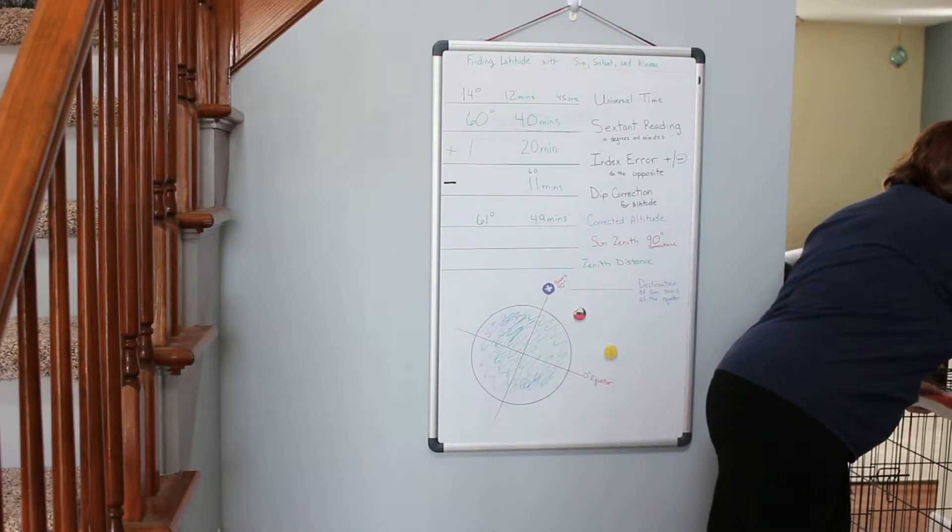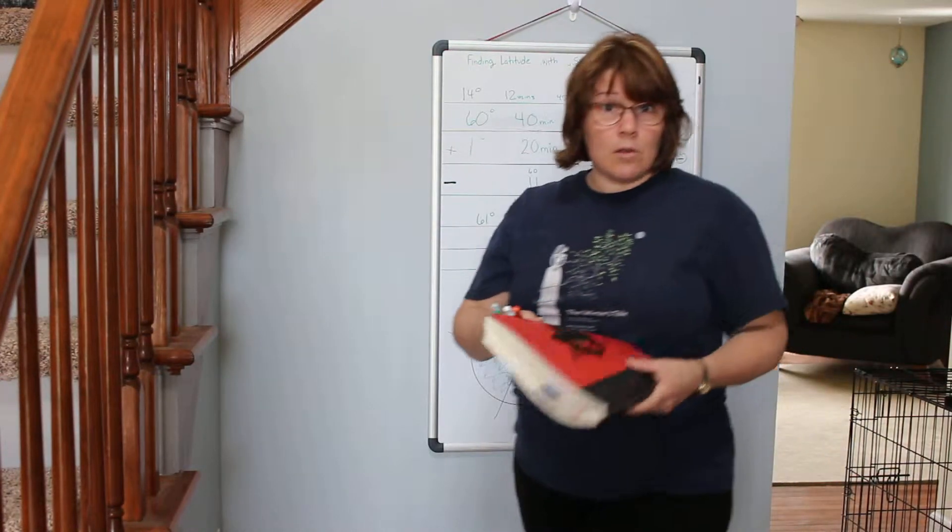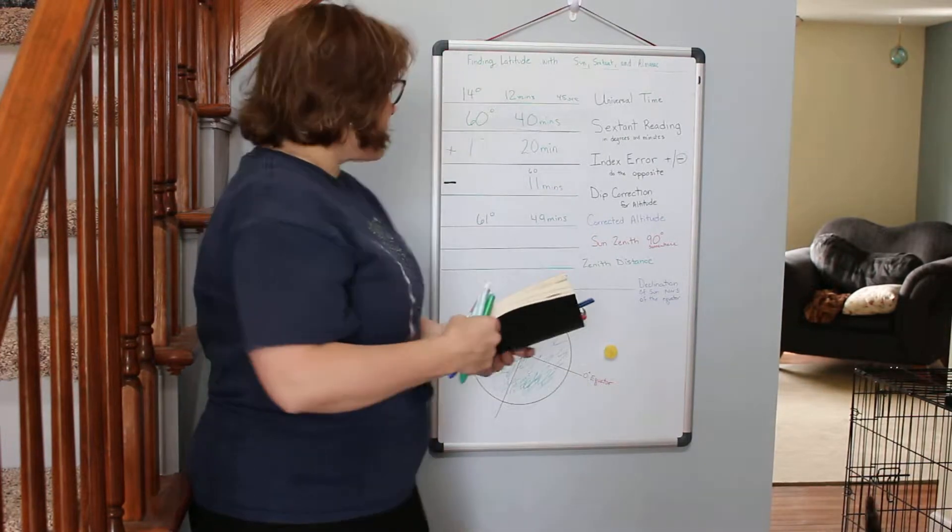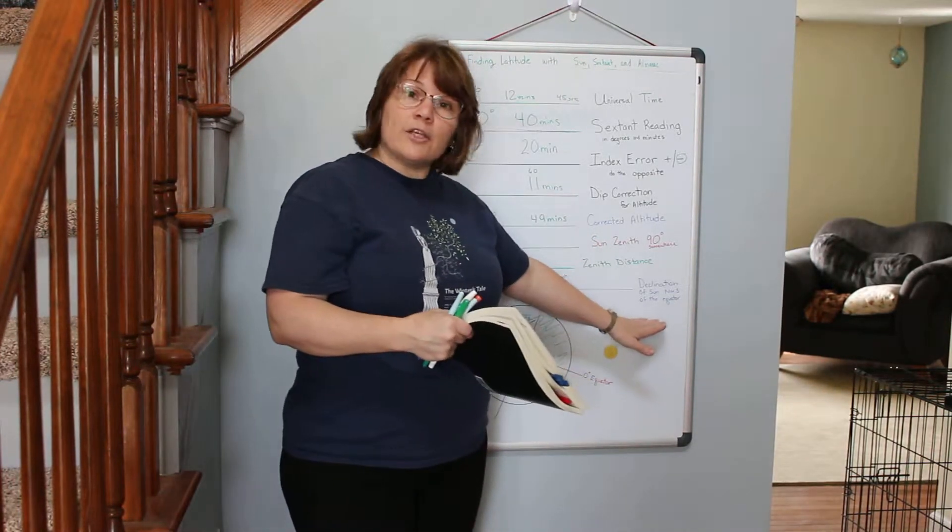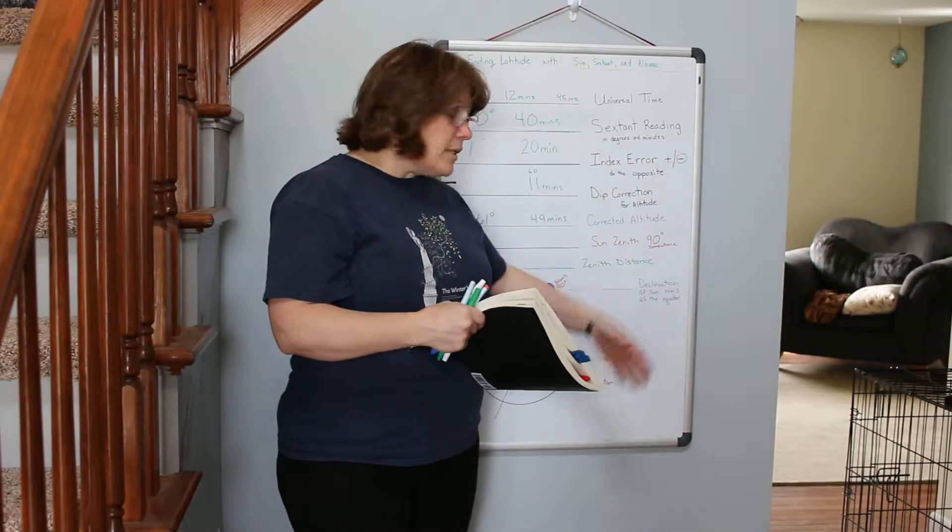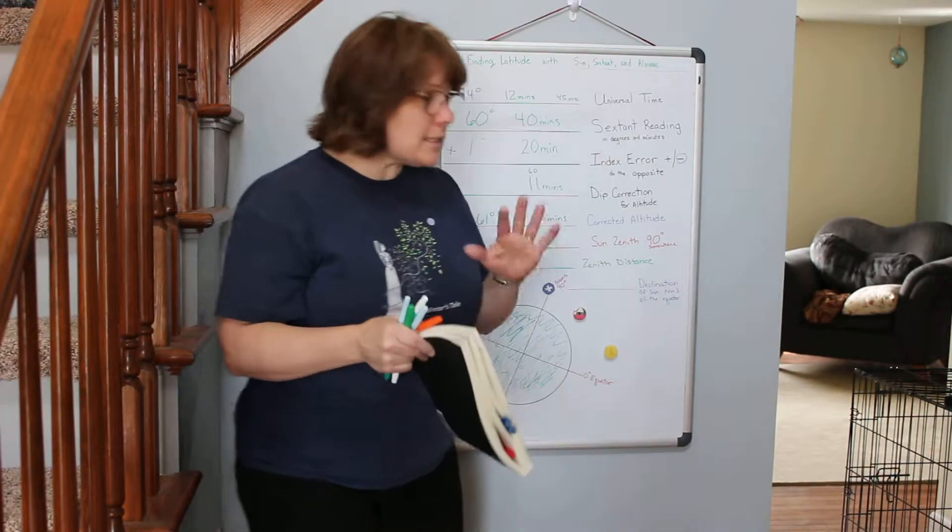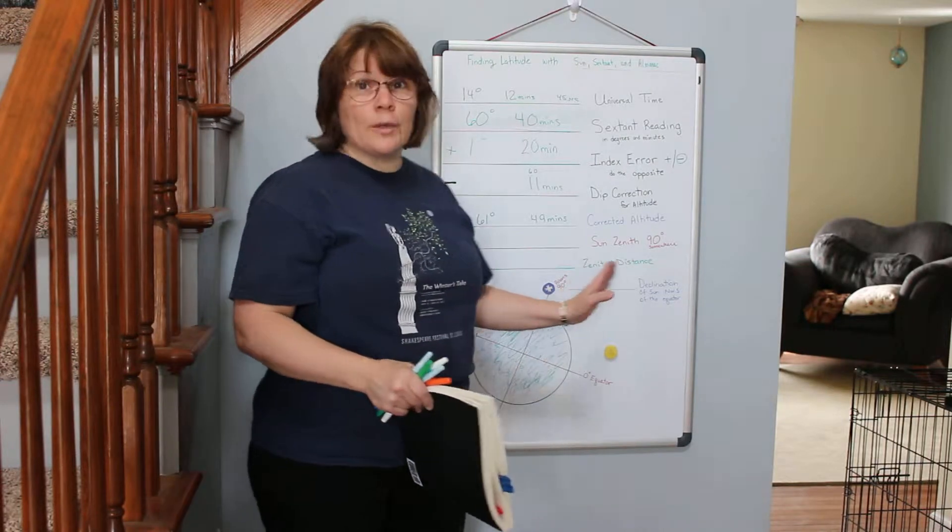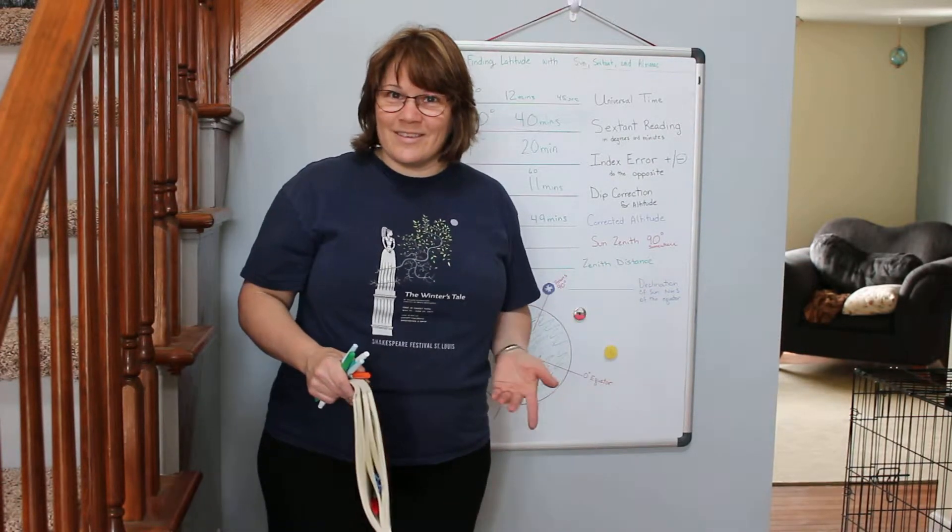So here we've got the Nautical Almanac. It's really easy to find something called your declination for the sun. Now the sun's declination is a really simple concept. The earth is tilted at a particular degree. It's 23.5 degrees.